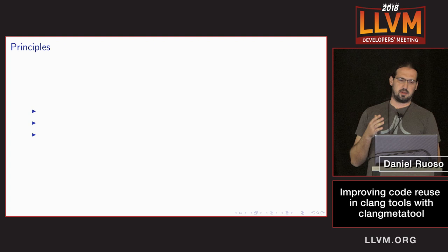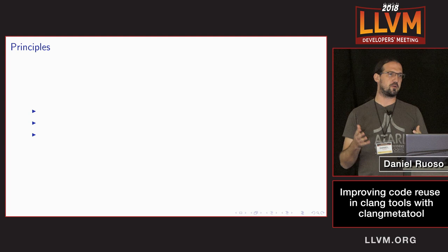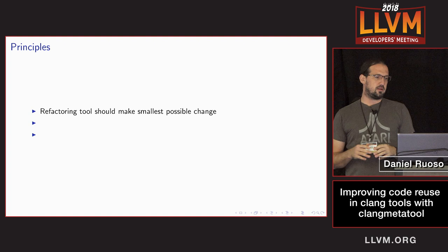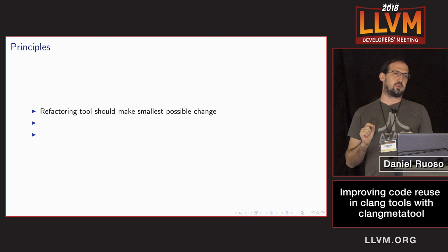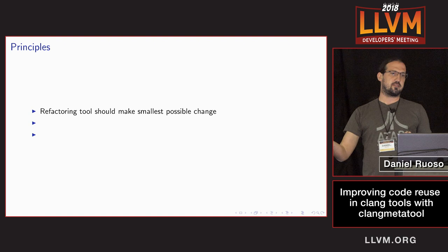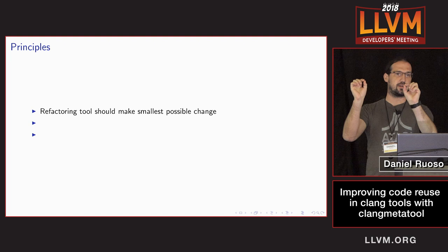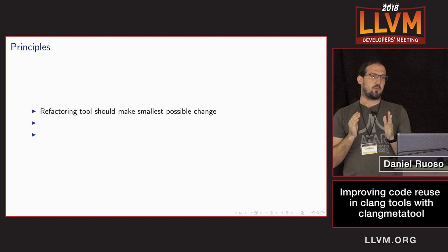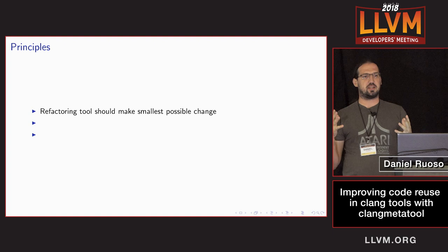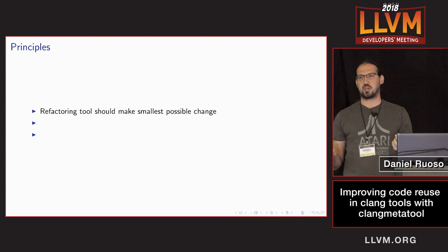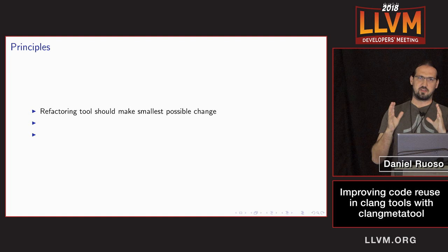At that point we came up with a few principles that have guided how we implement Clang tools — and we're also applying these to our Haskell framework for analyzing and rewriting Fortran. The first principle is that a refactoring tool should make the smallest change possible. That means when I change a file, I'm not re-dumping the AST. Instead I find the specific statement or expression to change, grab the source range for that expression, and add a string replacement. That's important because, as confident as you may be in your tool, you still want a human to review it before it gets checked in, and it's hard to review if you're also introducing whitespace changes or reformatting.